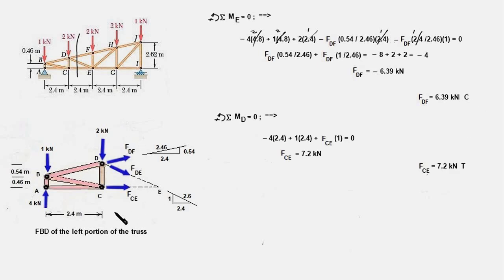We now write the moment equation about point D, and purpose in doing so is that these two forces would get eliminated from our equation because both of them pass through point D, and we'll have only one unknown FCE in our moment equation. So all these three forces which pass through point D will have zero moment. The moment of FCE would be FCE times one meter which is the moment arm. The moment arm for these two forces would be the distance AC which is 2.4 meters. So we have this equation minus 4 times 2.4 plus 1 times 2.4 plus FCE times one equal to zero,